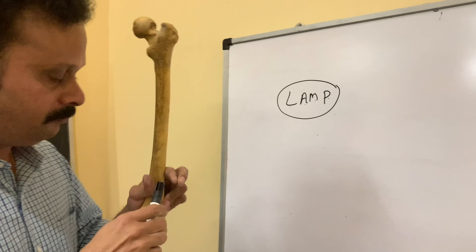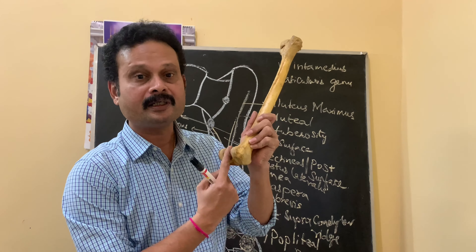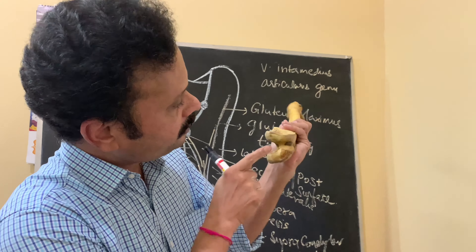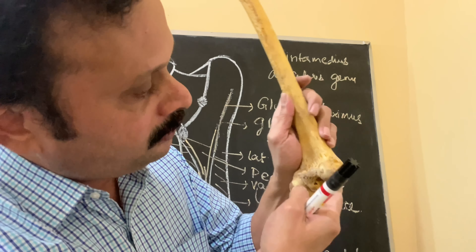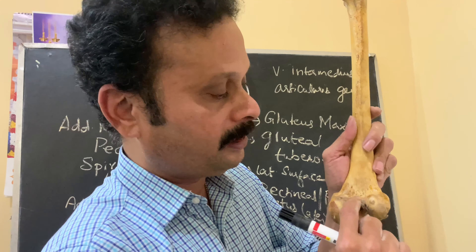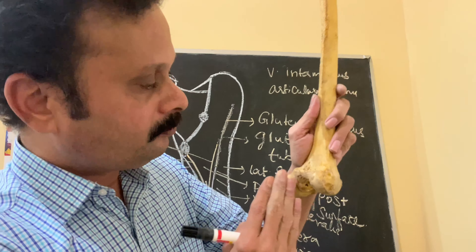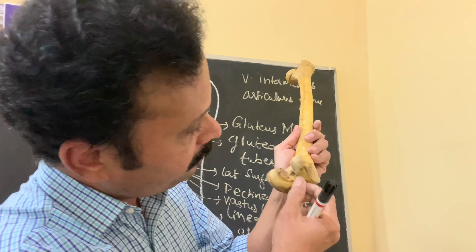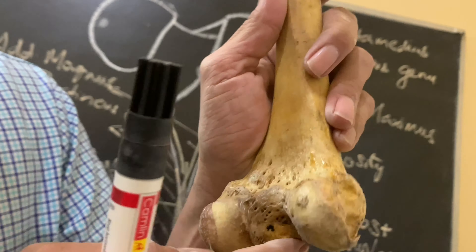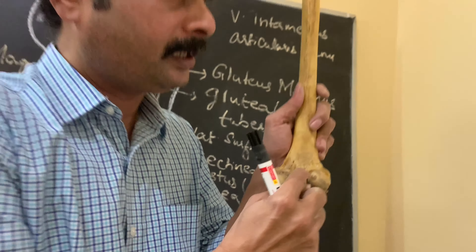To remember the cruciate ligament attachments: to the lateral condyle it is the anterior cruciate ligament, and to the medial condyle it is the posterior cruciate ligament — you can use the word 'LAMP' for better remembrance. The intercondylar area, also called the intercondylar fossa or notch, is limited anteriorly by the patellar articular surface and posteriorly by the intercondylar line between the two condyles.